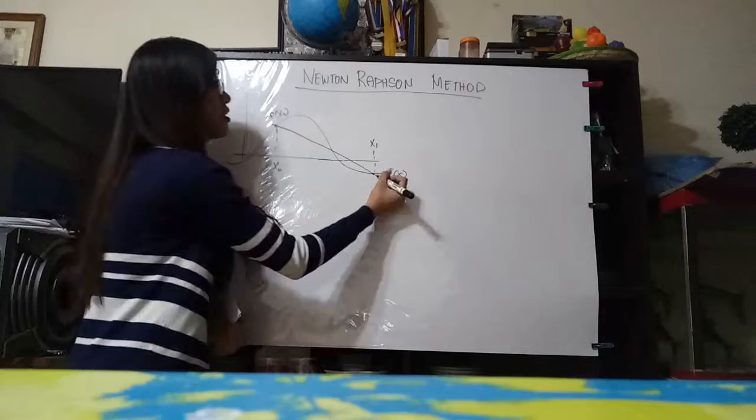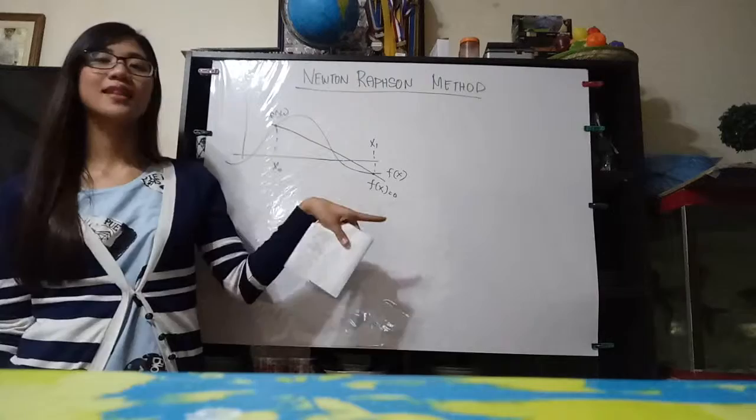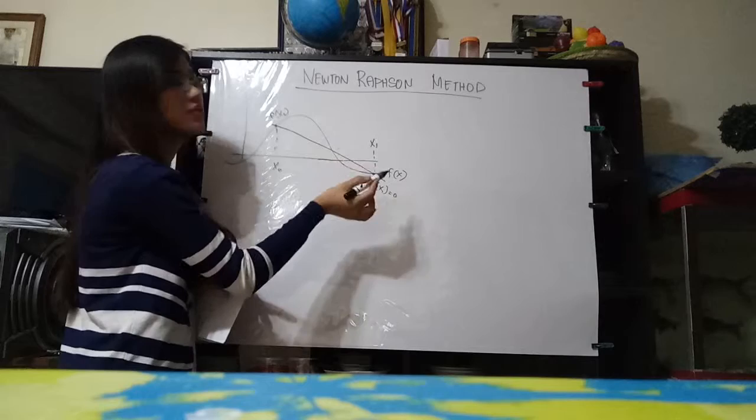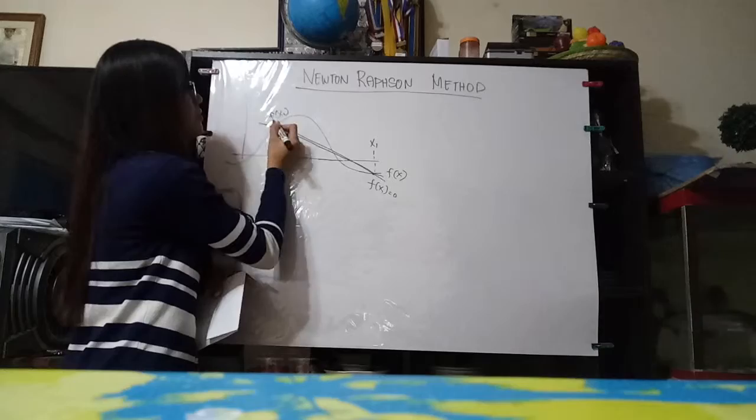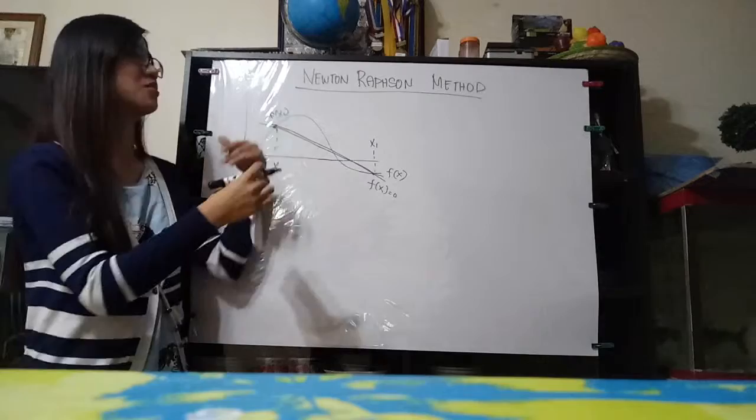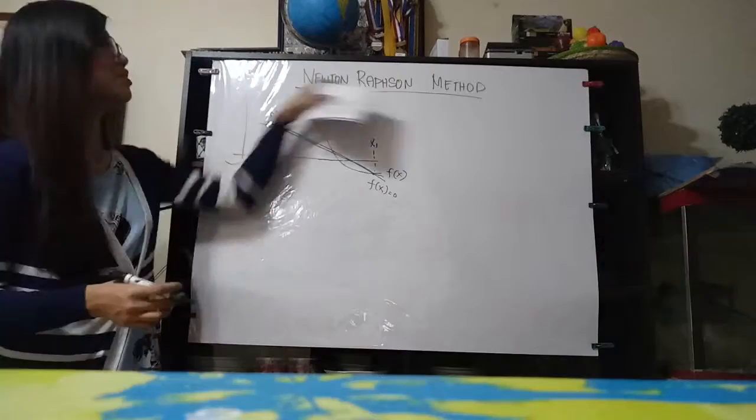Now when we have our x of 1 here, same as with x naught, we evaluate the function at this point. We evaluate that and then we find its derivative. So if we find the derivative at this point that would become somehow like this. It's actually close to x naught. So basically we're trying to get close as we derive our functions here.